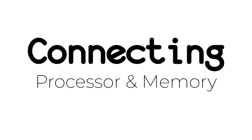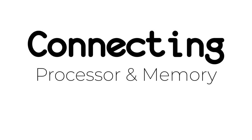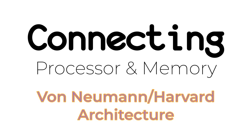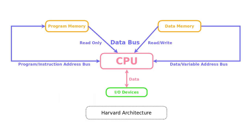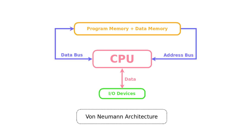The processor and memory can be connected to each other using two different architectures known as Harvard architecture and von Neumann (or Princeton) architecture. Harvard architecture uses two separate and isolated pairs of address and data buses — one for program memory and one for data memory — whereas von Neumann architecture relies on a single pair of address and data buses.